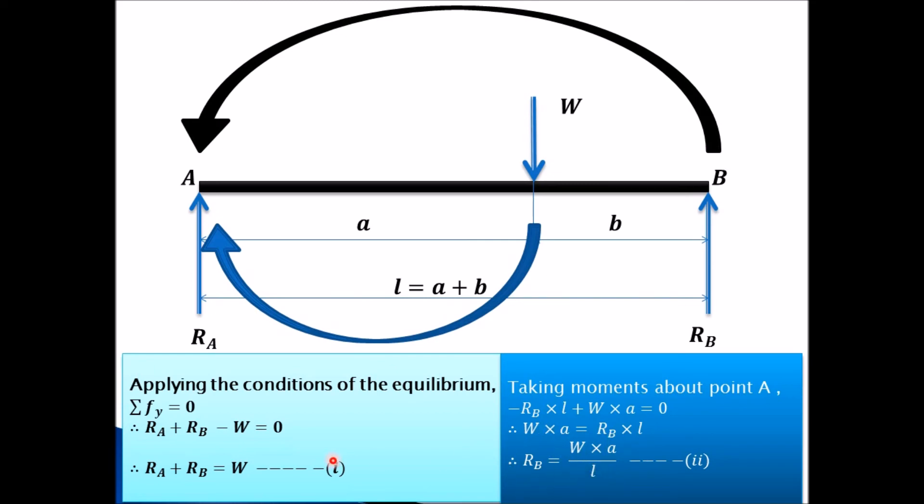This value of RB, we can substitute it over here to find out the value of RA. So from this equation 1, RA will be equal to W minus RB. Substitute the value of RB. RB just now we have calculated. That value is this one. That value we can substitute over here.